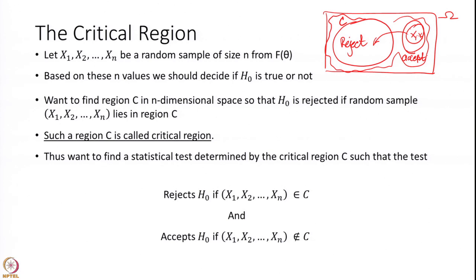Generally in statistics we do not say we accept the null hypothesis — we only say that we do not have sufficient reasons to reject it. There is always a doubt: had the sample been larger, or had it been another sample, possibly it would have been rejected. Therefore we always say that we did not have sufficient evidence to say that the null hypothesis can be rejected. This is how we define a critical region.